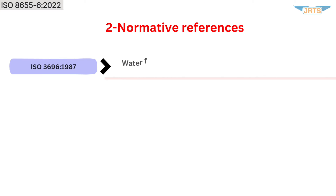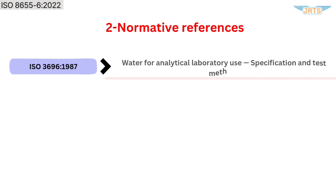Section 2, Normative References: ISO 3696:1987 — Water for Analytical Laboratory Use: Specification and Test Methods.